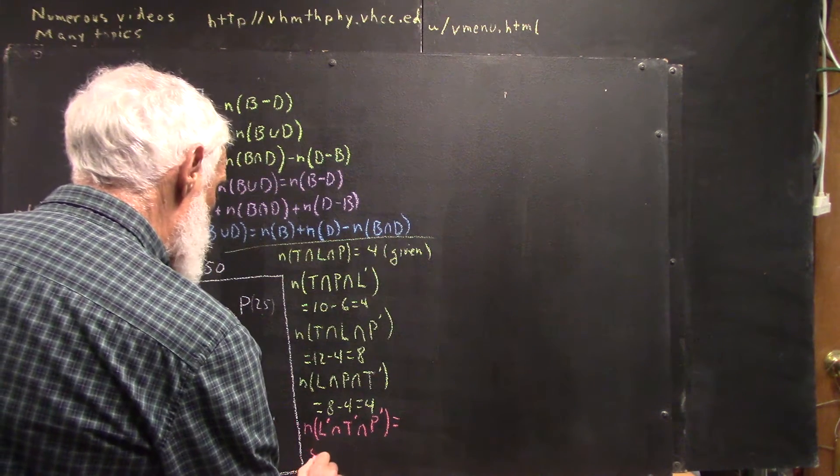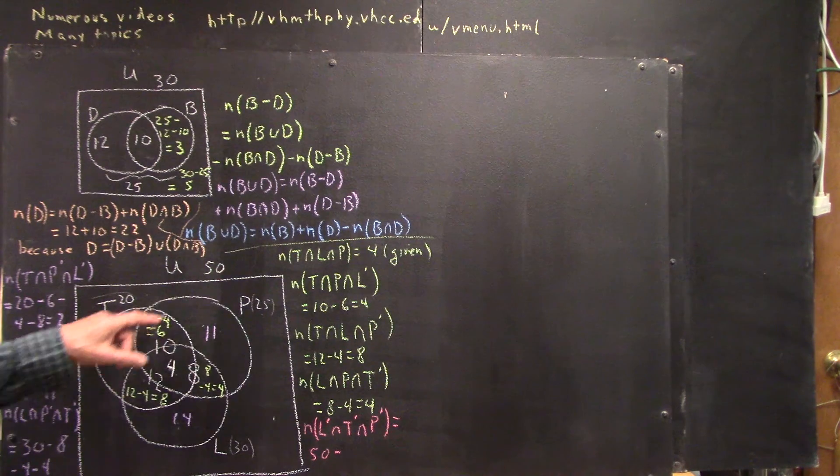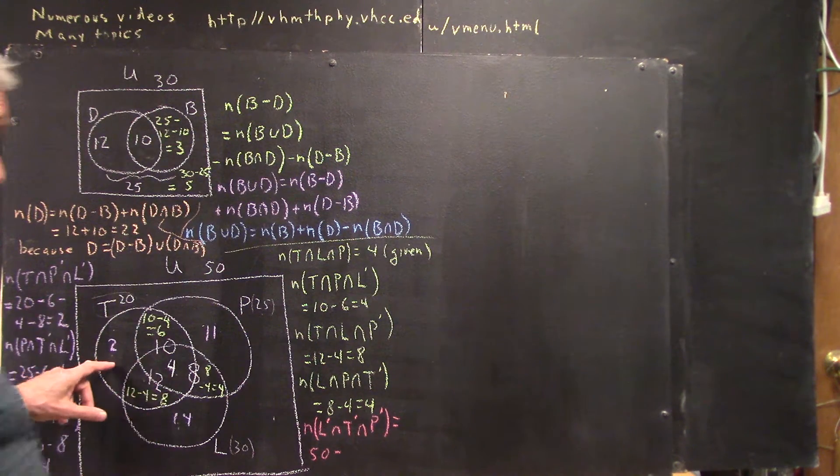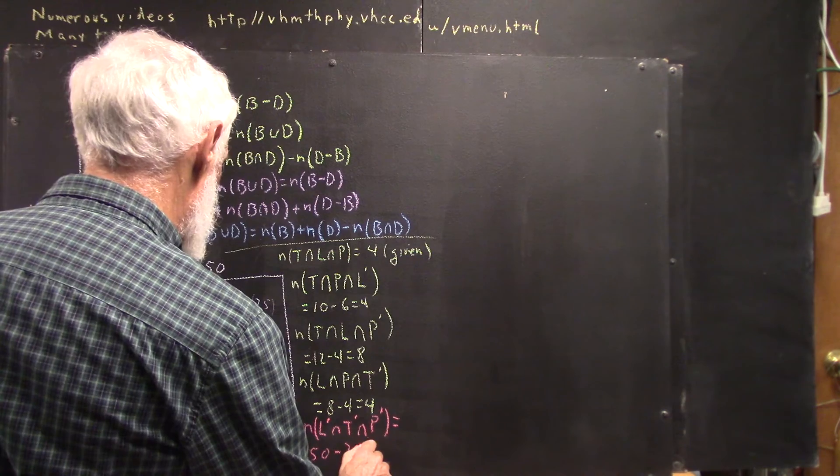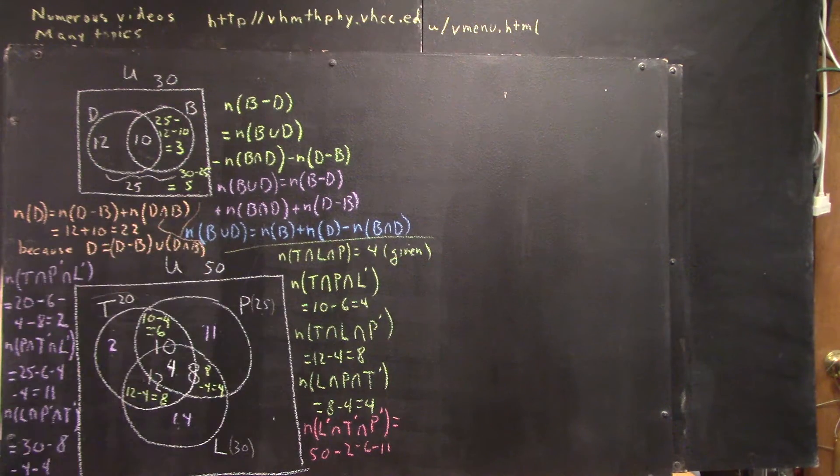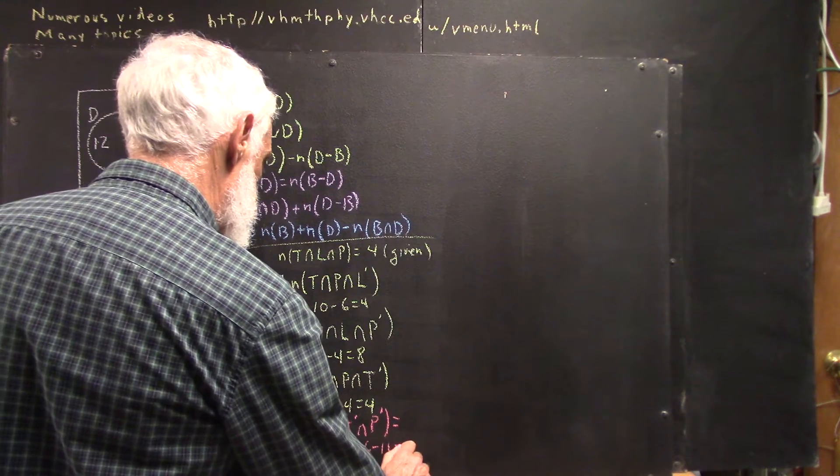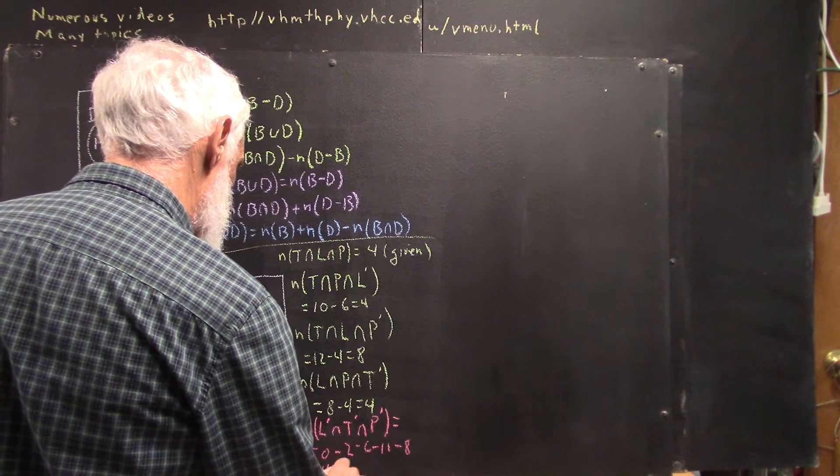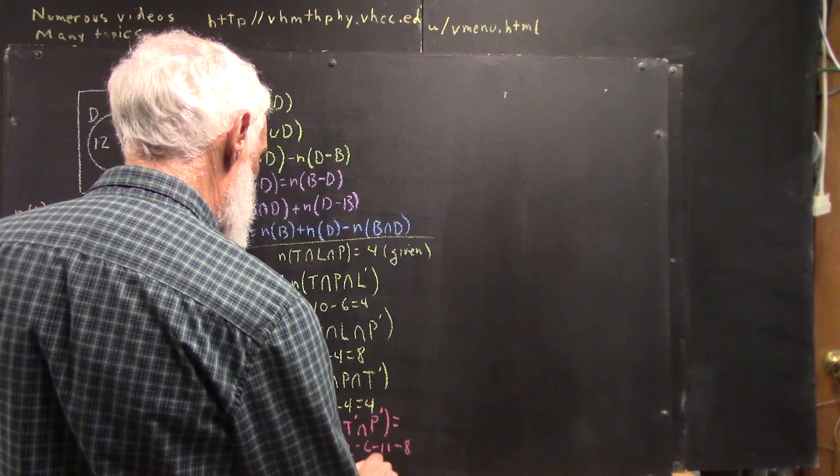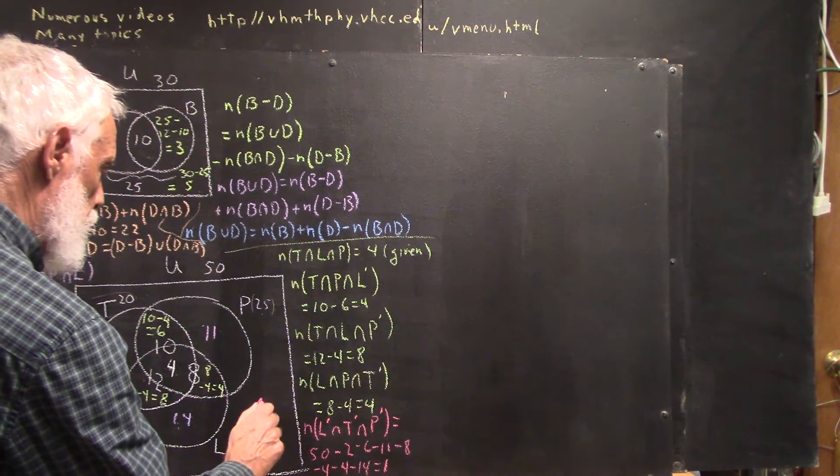Well, the 50, which is the total number you have, minus the number in each of these small regions. We could shortcut that a little bit, but I'm just going to do it like this: 50 minus the 2 minus the 6 minus the 11—that gets the top three numbers—and then the 8, the 4, and the 4 gets these three, and that leaves just the 14 to account for. And that equals one, so now we know that the number here is one.